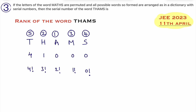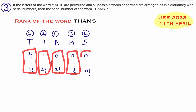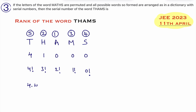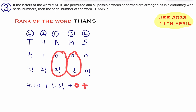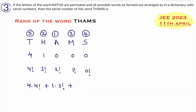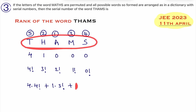Now pair these values with factorials starting from 0! up: 0!, 1!, 2!, 3!, 4!. Multiply each value by its corresponding factorial: 4 × 4!, 1 × 3!, 0 × 2!, 0 × 1!, 0 × 0!. The rank of this word equals 4 × 4! + 1 × 3! + 0 × 2! + 0 × 1! + 0 × 0!. Since the last three terms are zero, we only keep the first two terms.